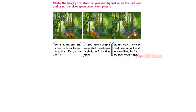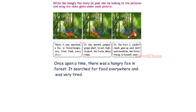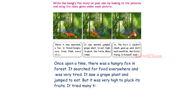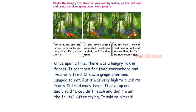Next, write the hungry fox story on your own by looking at the pictures and using the clues given. Answer: once upon a time there was a hungry fox in the forest. It searched for food everywhere and was very tired. It saw a grape plant and jumped to eat, but the fruits were very high to pluck. It tried many times but gave up, and sadly said to himself, 'I couldn't reach them and I don't want the fruits.' The fruits were sour.